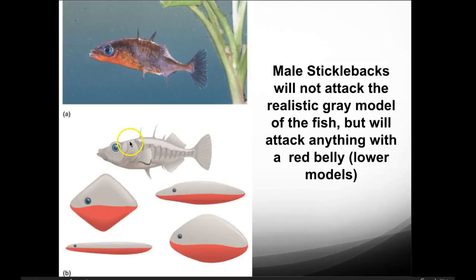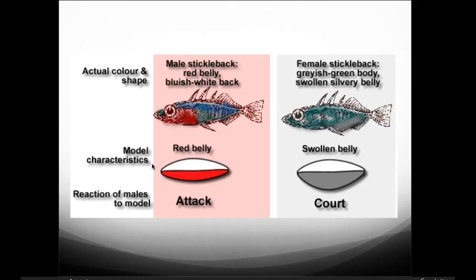The male stickleback would welcome or not attack the female replica. That is a fixed action pattern — the trigger being another male of the species in the environment. The male stickleback fish has a red belly and bluish-white back, while the female stickleback fish has a grayish-green body and a swollen silvery belly.